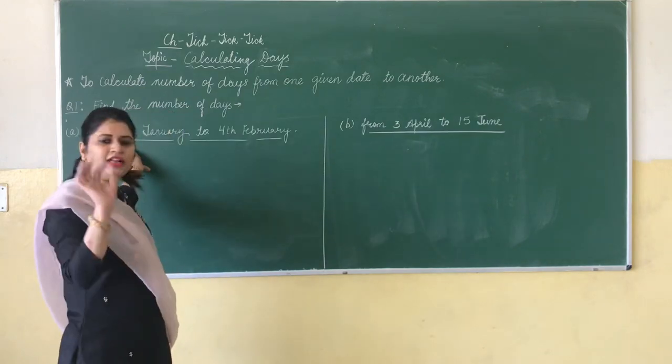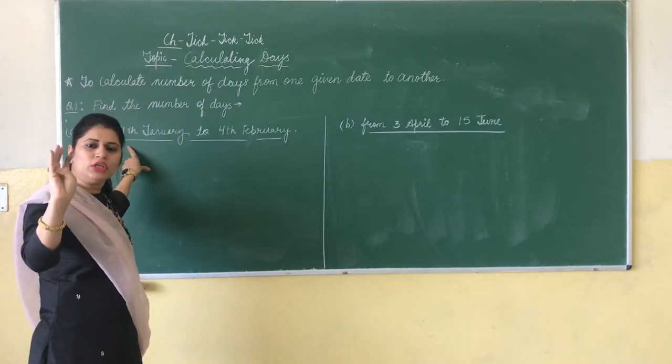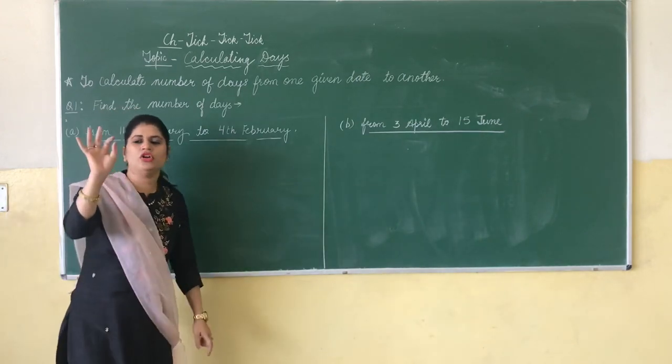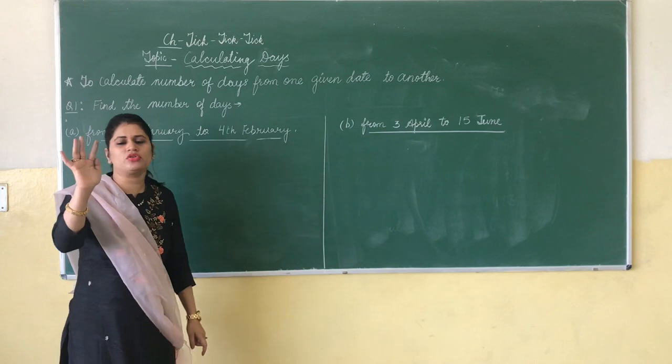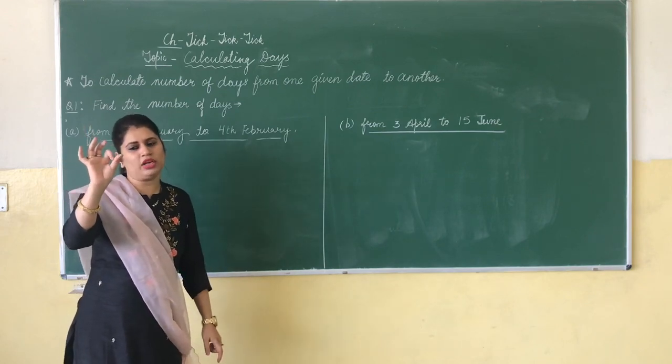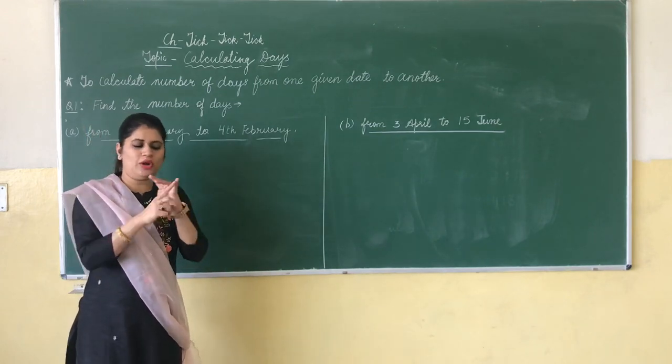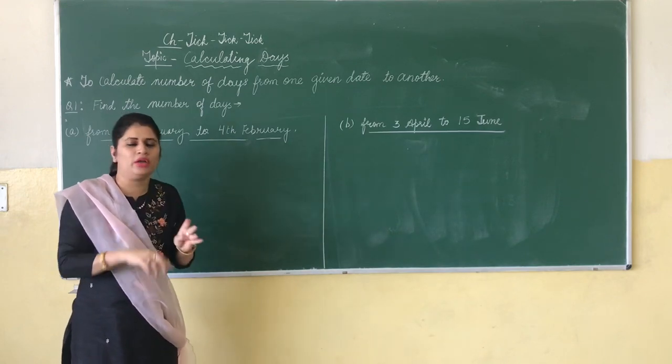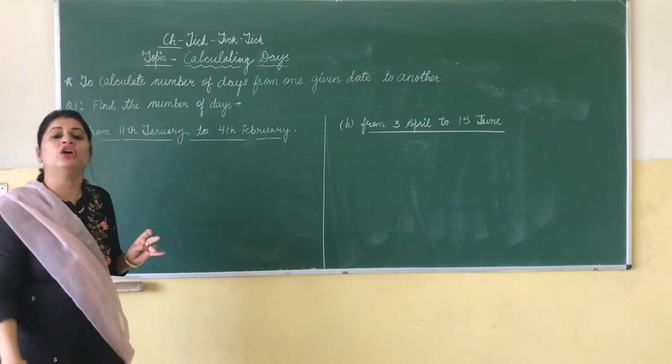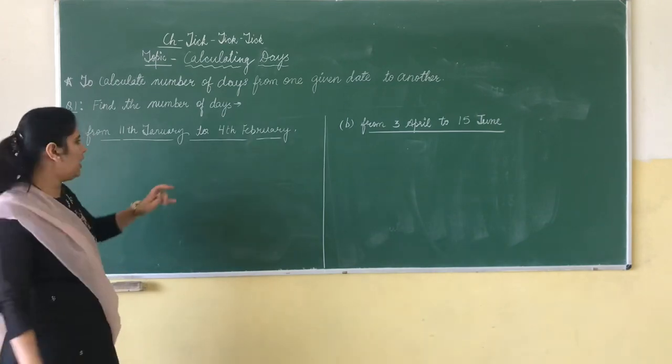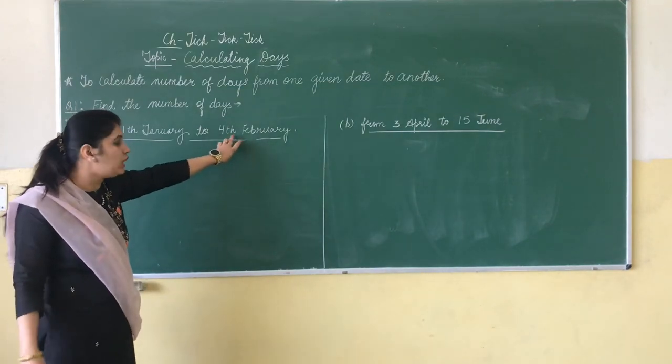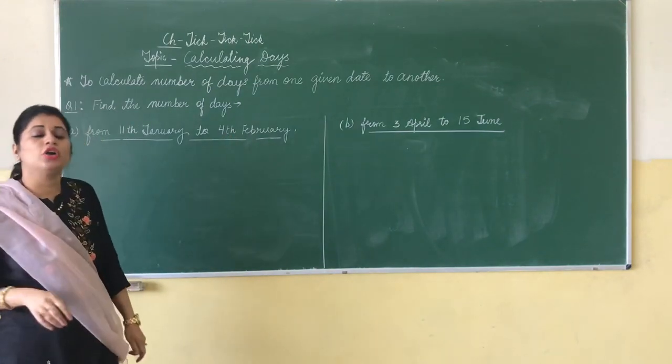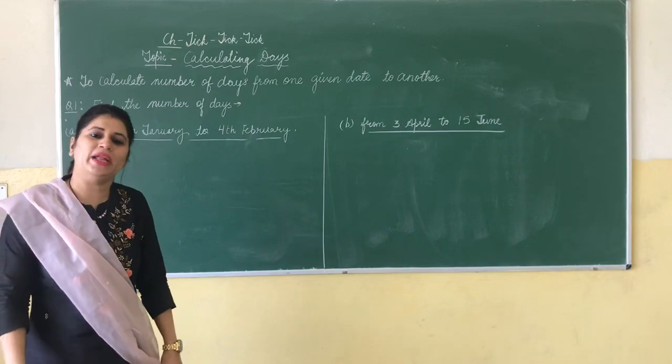So 11th January, that means we count 11, 12, 13, all the way through 20, 21, 22, 23, 24, 25, 26, 27, 28, 29, 30, and 31. So how many days of January? 21 days. And how many days of February? Till February 4th, so 1, 2, 3, 4. So total number of days are 25.